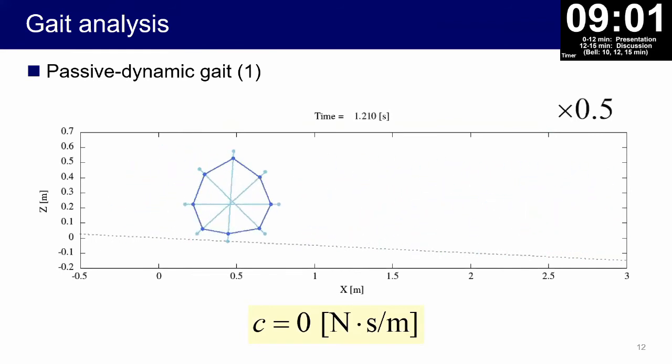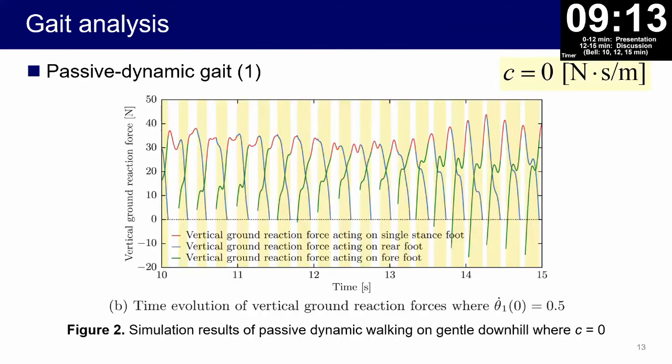We can see that the walker can successfully generate a passive dynamic gait on a gentle slope. However, the passive dynamic gait has a problem. The red line shows the vertical ground reaction force acting on the stance foot in single limb support phase. The blue line shows the vertical ground reaction force acting on the rear foot in double limb support phase. The green line shows that acting on the forefoot. We can see that the vertical ground reaction force acting on the rear foot monotonically decreases and reaches zero at the end of every double limb support phase, whereas that acting on the forefoot sometimes becomes negative immediately after impact.